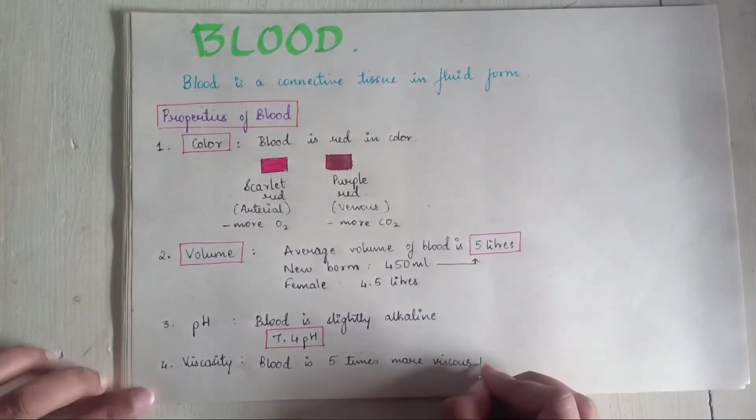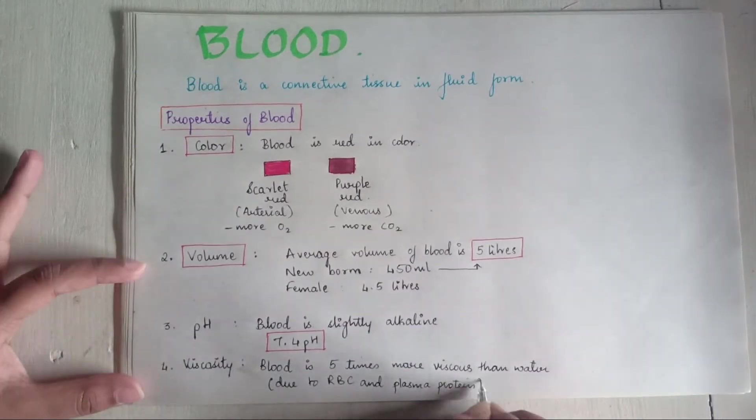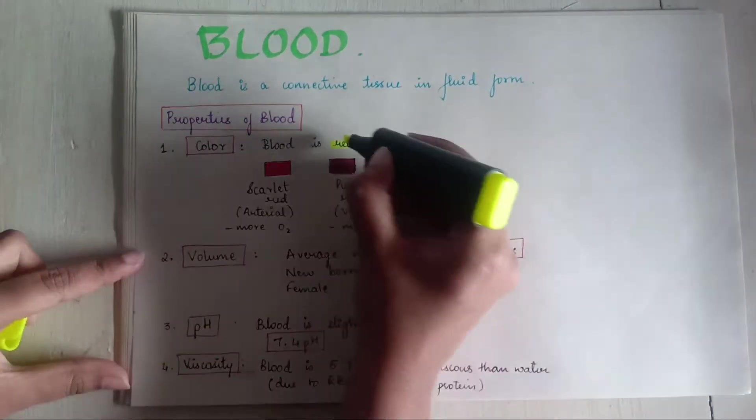Viscosity: Blood is 5 times more viscous than water, that is due to RBC and plasma proteins.